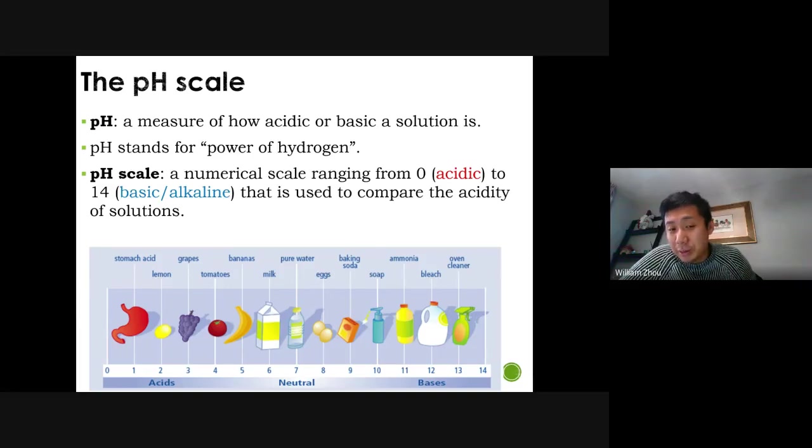Look at the pictures on the pH scale. The acids you have stomach acid, lemon, grapes, tomatoes, banana, milk. Food. Thank you. The acids, a lot of them are foods. The foods that we eat are acidic. Except eggs. Eggs are slightly basic. But look at the bases. Baking soda, soap, ammonia, bleach, oven cleaner. They all sound terrible to ingest. And they're all cleaning agents. So yeah, already, alkaline diet, think about what that says. Basic food. We don't eat basic food.